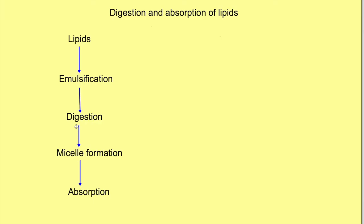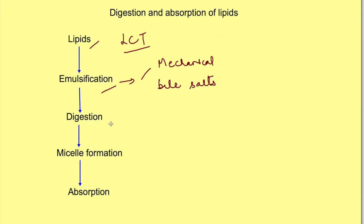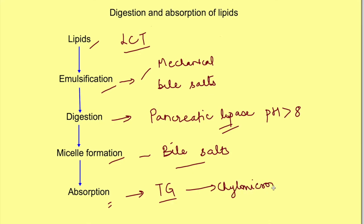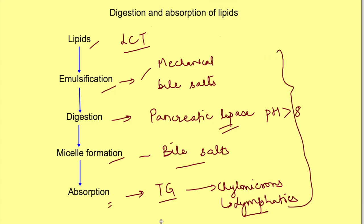To quickly revise: long-chain triglycerides are present in diet. Emulsification breaks particles by mechanical events, kept separate by bile salts. Digestion mainly occurs by pancreatic lipase, active at alkaline pH greater than 8. Micelle formation requires bile salts as carriers for absorption. Absorption involves binding to carrier proteins, resynthesis of triglycerides, and transport via chylomicrons into lymphatics. Any problem in these events will lead to steatorrhea, which will be discussed in detail in the next video.